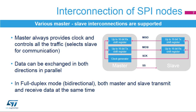The SPI master always controls the bus traffic and provides the clock signal to the dedicated slave through the SCK line. The master can select the slave it wants to communicate with through the optional slave select, or SS signal. Data stored in the dedicated shift registers can be exchanged synchronously between the master and slave through the MOSI, or master output slave input, and the MISO, or master input slave output data lines.